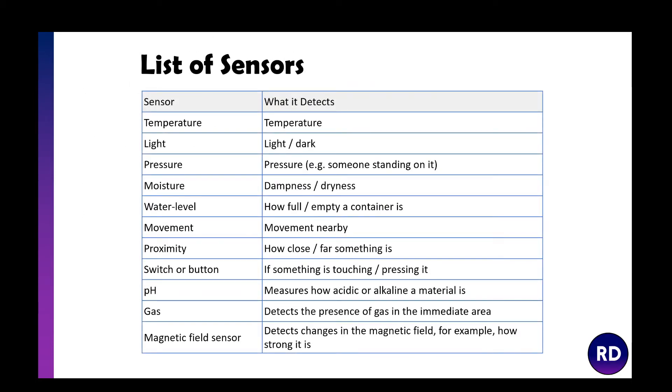Now the list of sensors that you need to understand are temperature, light sensors, pressure, moisture, water level, movement, proximity, switches or buttons, pH level, gas and magnetic fields. Take a look at the table on screen.